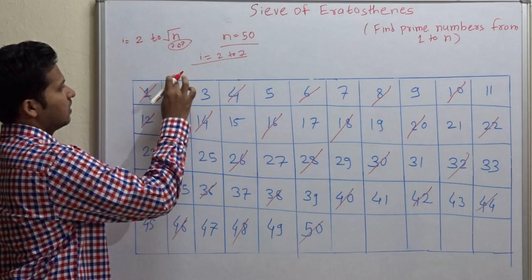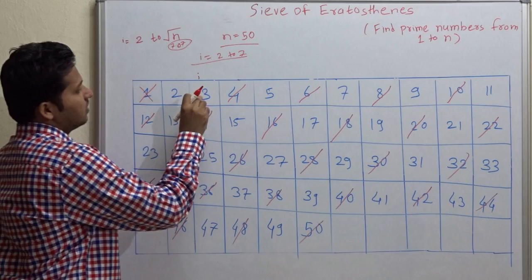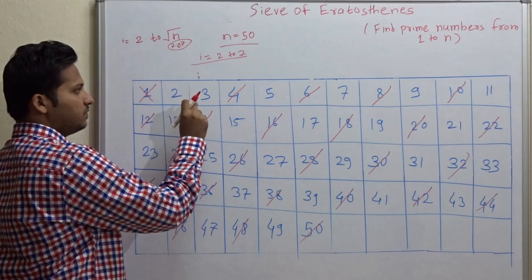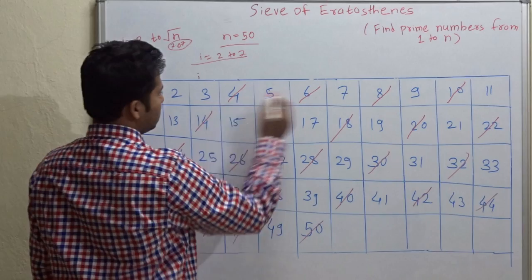Now let us increment i. i goes at this location. Now this number is not cancelled means this is a prime number. Let us cancel the multiples of this prime number.